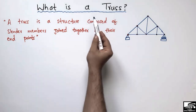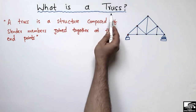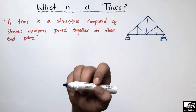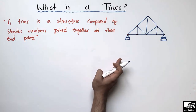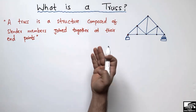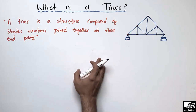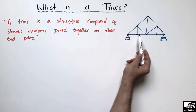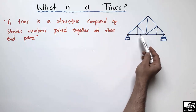Today our lecture is about the truss structure — what is a truss, why we use it, what are the different conditions used in truss structures, and what are the methods to solve the problem of a truss structure. A truss is basically a system of triangles.